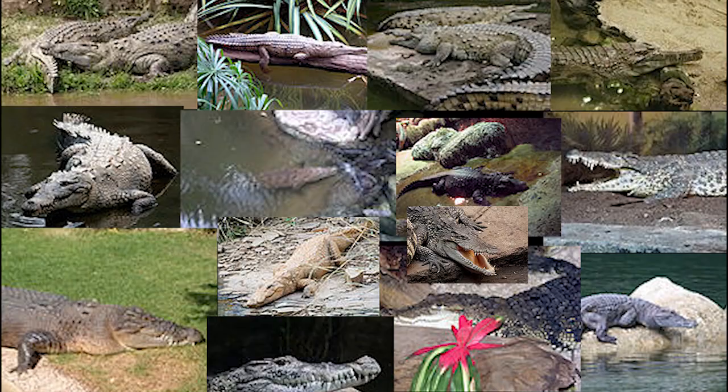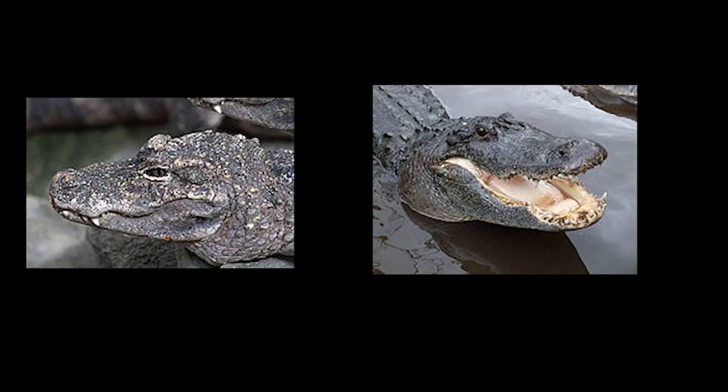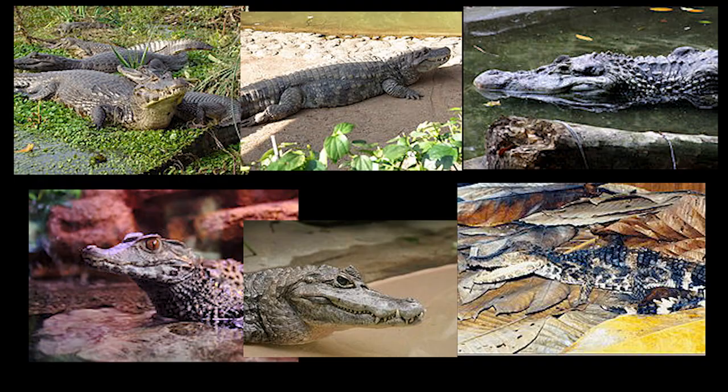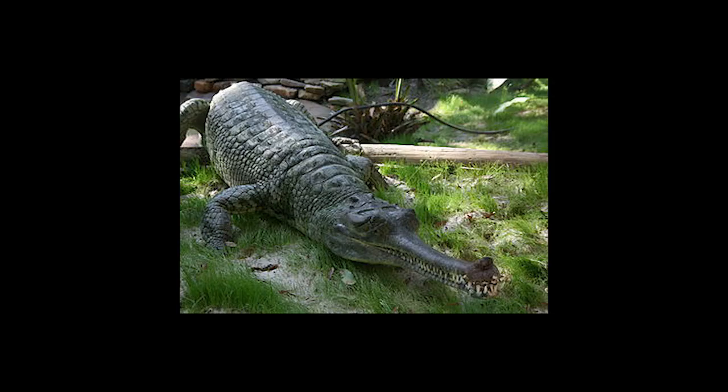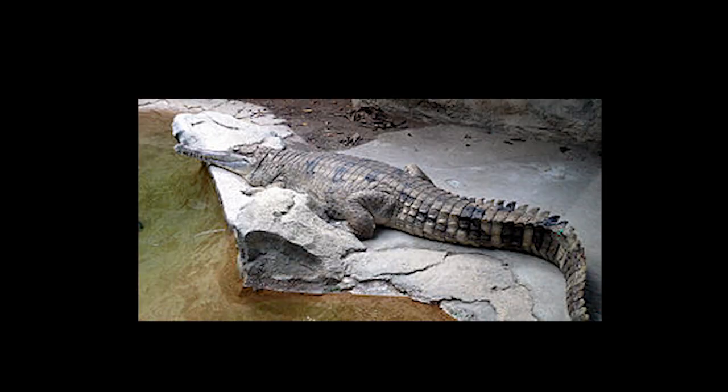There are currently 14 extant species of crocodile, two species of true alligator, six species of caiman, one species of Gharial, and one species of False Gharial.